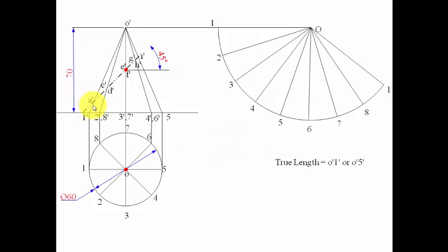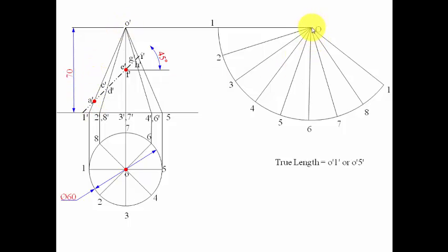Cutting point A lies on the true length O-dash 1-dash. Take a radius from O to A, and with O as center, cut arcs at position 1 at the start and at position 1 at the end of the sector. Both give point A on the development.